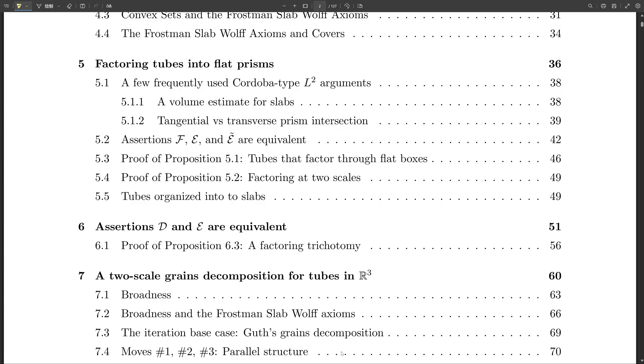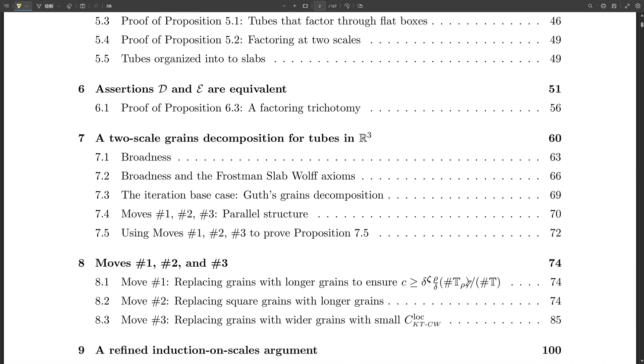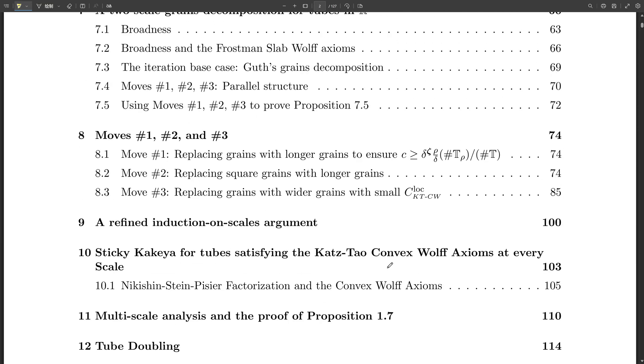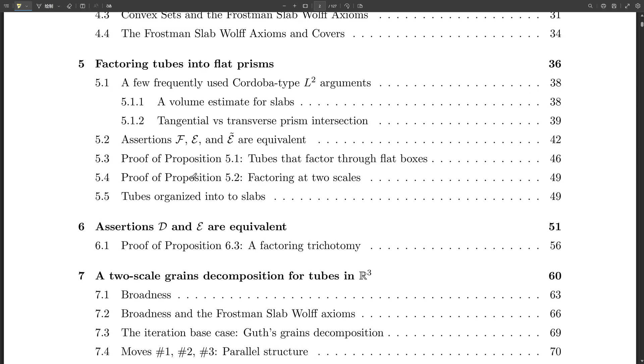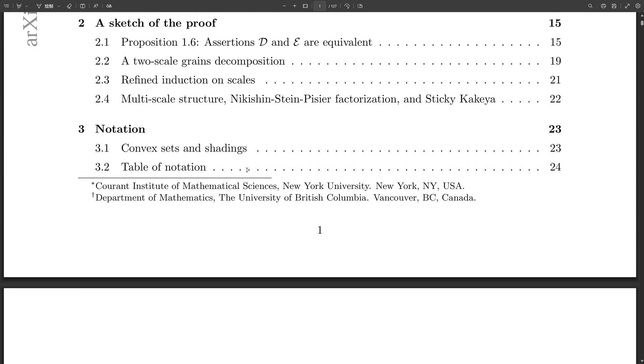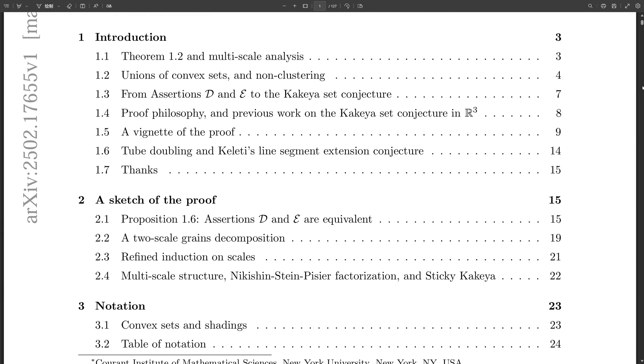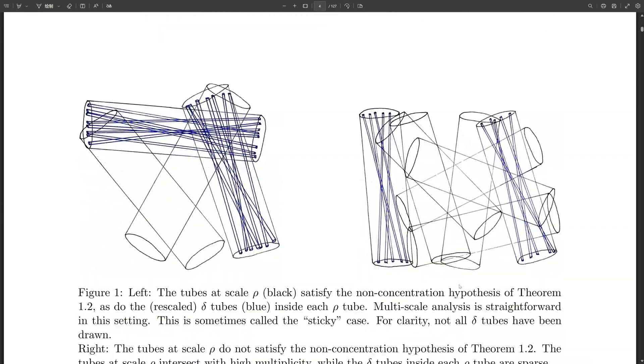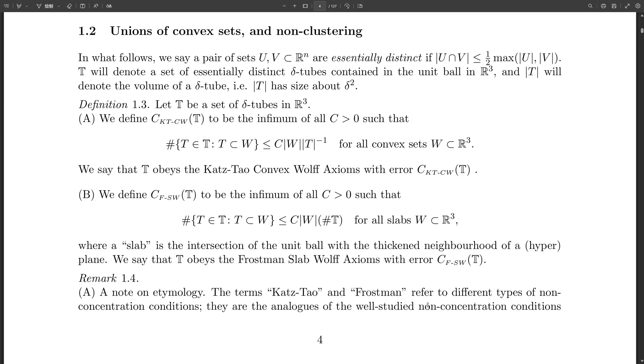So it's like solving one piece of a much larger puzzle, and that opens up new possibilities for research in other areas. Exactly. Remember how we talked about the connection to signal processing? Yeah, that was pretty mind-blowing. Well, in a very abstract sense, the Kakeya problem kind of relates to how efficiently we can represent information. Think about compressing images or audio files. That's all about finding clever ways to pack information in without losing any quality. Oh, interesting. So this proof could potentially lead to better compression algorithms, smaller file sizes, faster downloads. It's definitely possible. The techniques they developed to analyze those non-clustering tubes, those might give us new ways to think about representing information more efficiently.